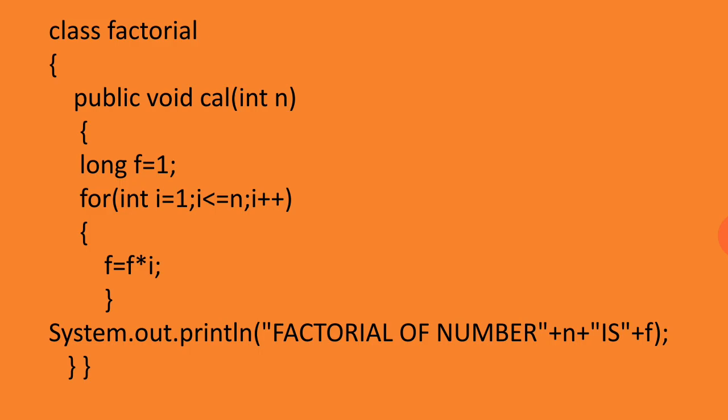First time f is 1, i is also 1, so 1×1 equals 1. Next time when the loop executes, i is 2. I'm talking when n is 5. So 2×1 is 2. Then f times i, this time f maintains its previous value that is 2, and i is 3, so 2×3 is 6. Then f is 6, so 6×4 is 24.